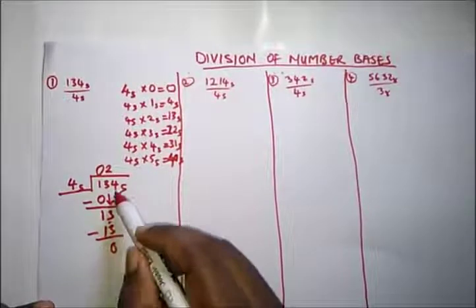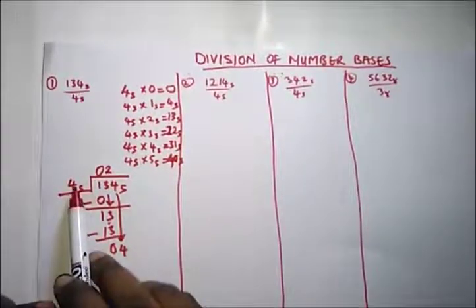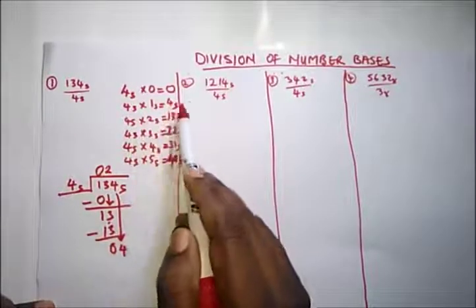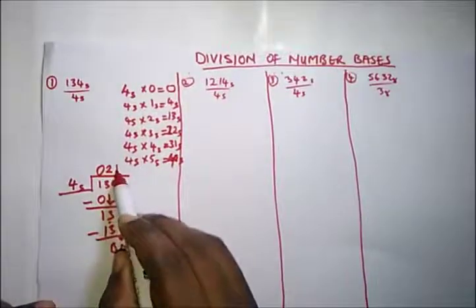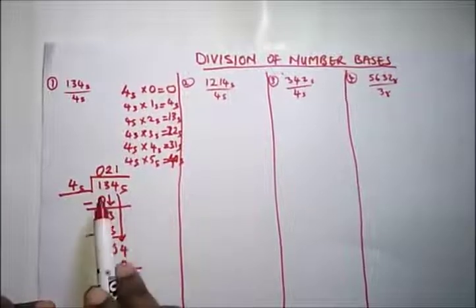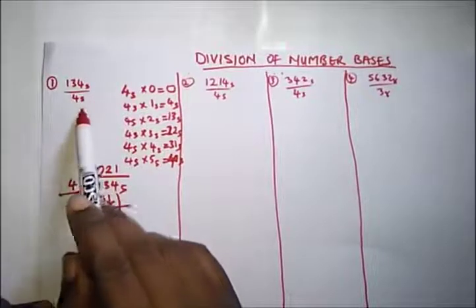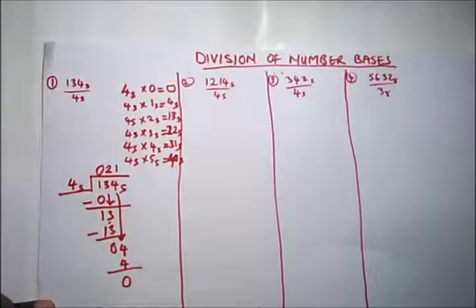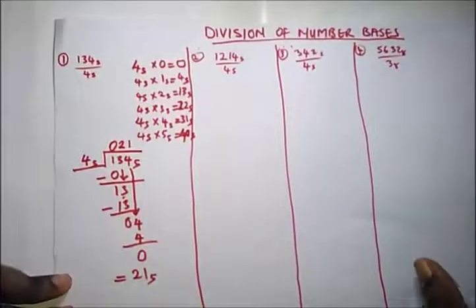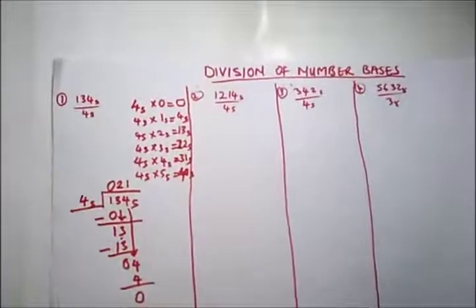Bring down the 4. We now have 4. 4 into 4 goes 1 time, because 4 times 1 is 4 in base 5. Write 1. 1 times 4 gives 4, subtract, and we have 0. So the division of 134 base 5 divided by 4 base 5 equals 021 base 5, which is 21 base 5. If you multiply 4 base 5 times 21 base 5 you'll get back 134 base 5.